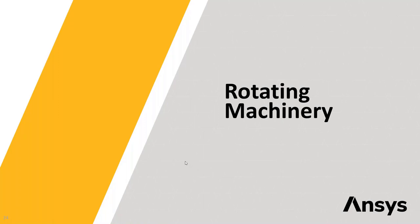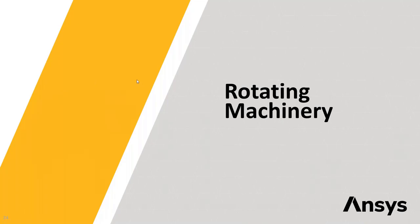My next topic is rotating machinery. One of the biggest changes is to TurboGrid. TurboGrid is very good at getting structured meshes around blades, which makes for high-accuracy simulations. If you've got small fillets, tip gaps, you can build those in. But what if you've got very large fillets or a propeller where you've really got a whole load of structure? You're never going to get a structured mesh on that. What you're able to do now is choose a location along the blade at which you want to switch from a structured mesh to an unstructured mesh.